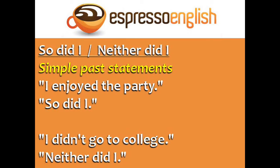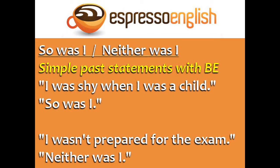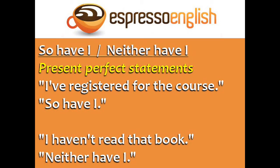Use 'so did I' and 'neither did I' in response to simple past statements. For example: 'I enjoyed the party' — 'so did I'. 'I didn't go to college' — 'neither did I'. 'So was I' and 'neither was I' are used to respond to simple past statements with 'be': 'I was shy when I was a child' — 'so was I'. 'I wasn't prepared for the exam' — 'neither was I'.